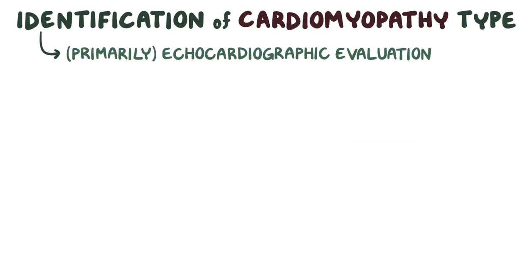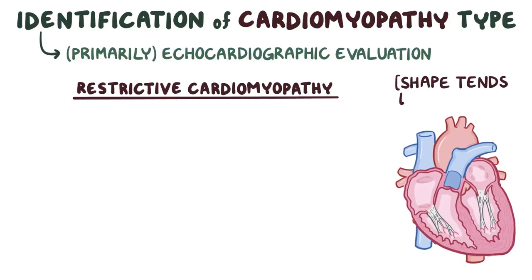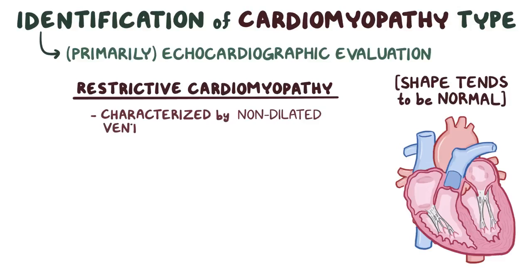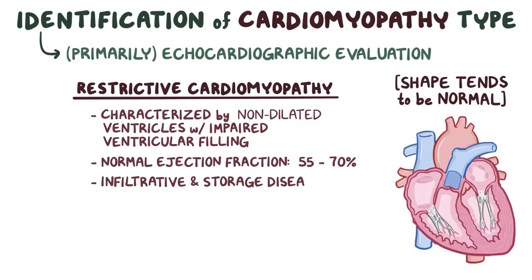Finally, in restrictive cardiomyopathy, the heart's shape tends to be normal, so it's characterized by non-dilated ventricles with impaired ventricular filling, but generally there's a normal ejection fraction, so between 55 and 70 percent. Hypertrophy is typically absent, although infiltrative and storage diseases may cause an increase in left ventricular wall thickness.